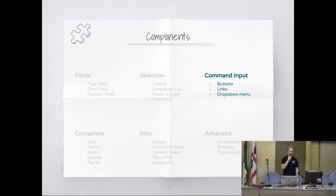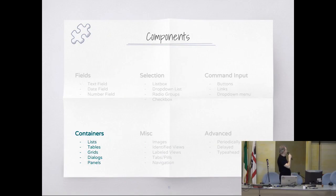Components for common input like buttons, links, or dropdown menus. And containers: lists, tables, grids, dialogs, panels.